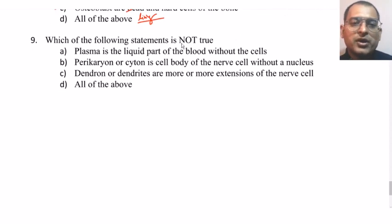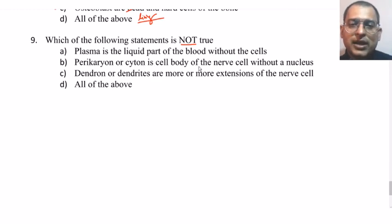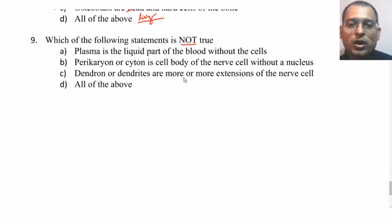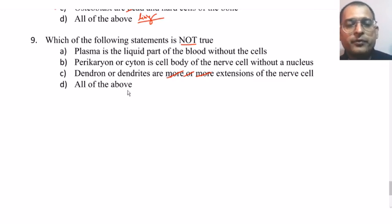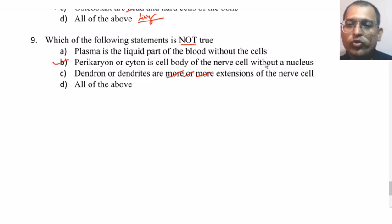Which of the following statements is not true? Plasma — liquid part of the blood without the cells; perikaryon or cytone — cell body of the nerve cell without a nucleus; dendron or dendrites — extensions of the nerve cells. The answer is perikaryon or cytone is the cell body of the nerve cell with a nucleus — it does consist of a nucleus.